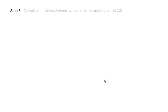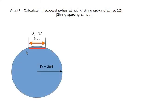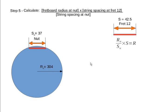Step 5: calculate the fretboard radius at the nut times the string spacing at fret 12, divided by the string spacing at the nut. The radius at the nut is 304mm, the string spacing at the nut is 37mm, and the string spacing at fret 12 is 42.5mm. So the radius at fret 12 is 349.2mm — we'll call that 349mm.